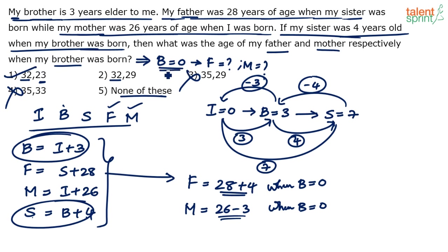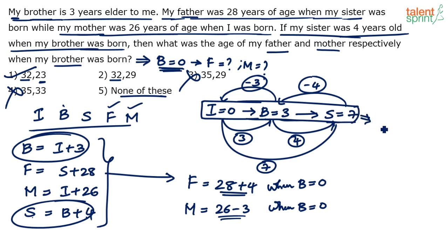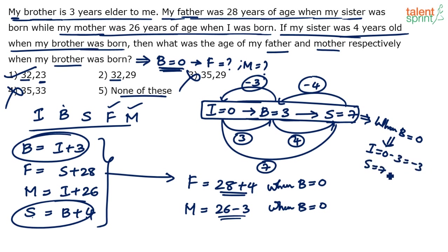We want brother's age to be 0. According to our timeline when i = 0, b = 3 and s = 7. To make b = 0, subtract 3 from everyone: i becomes 0 − 3 = −3, and s becomes 7 − 3 = 4. So when brother was born, I was minus 3 (not yet born) and sister was 4.